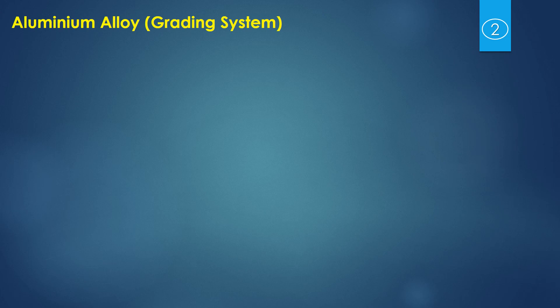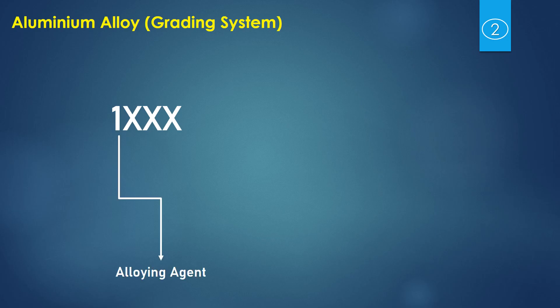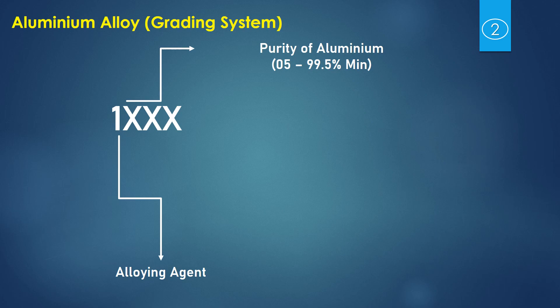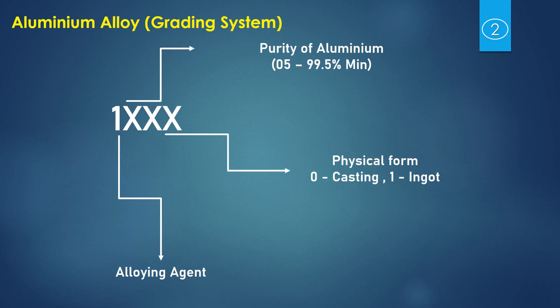Let us understand the Aluminium Alloys grading system before going into types of alloys. In the standard, there are four digits used to denote Aluminium Alloys. The first digit indicates the alloying agent — which alloying agent it is being alloyed with. The second and third digits explain the purity of Aluminium; for example, 05 means 99.5% minimum Aluminium is added in that alloy. The final digit indicates the physical form: 0 means it is in casting form, and 1 means it is in ingot form.